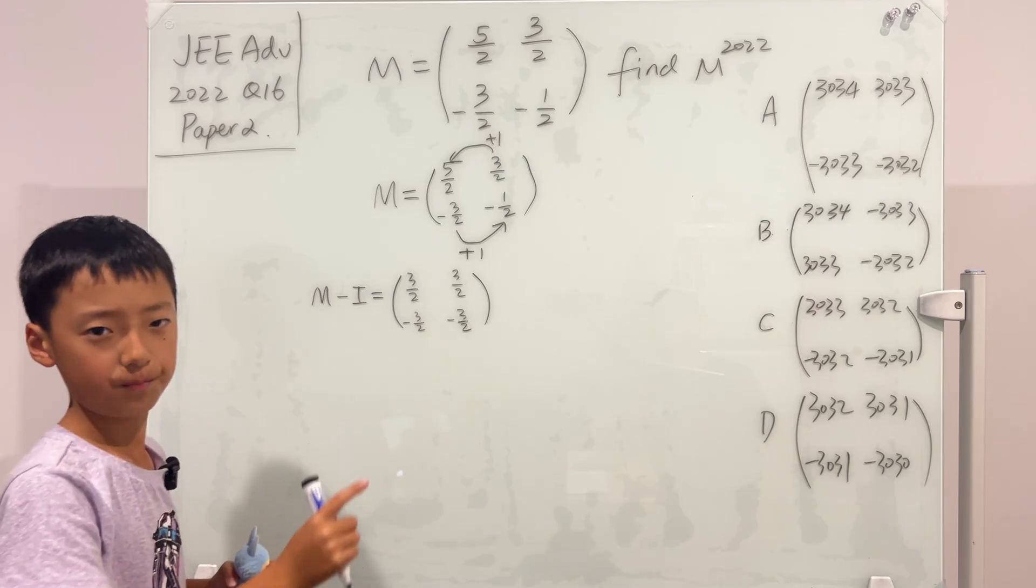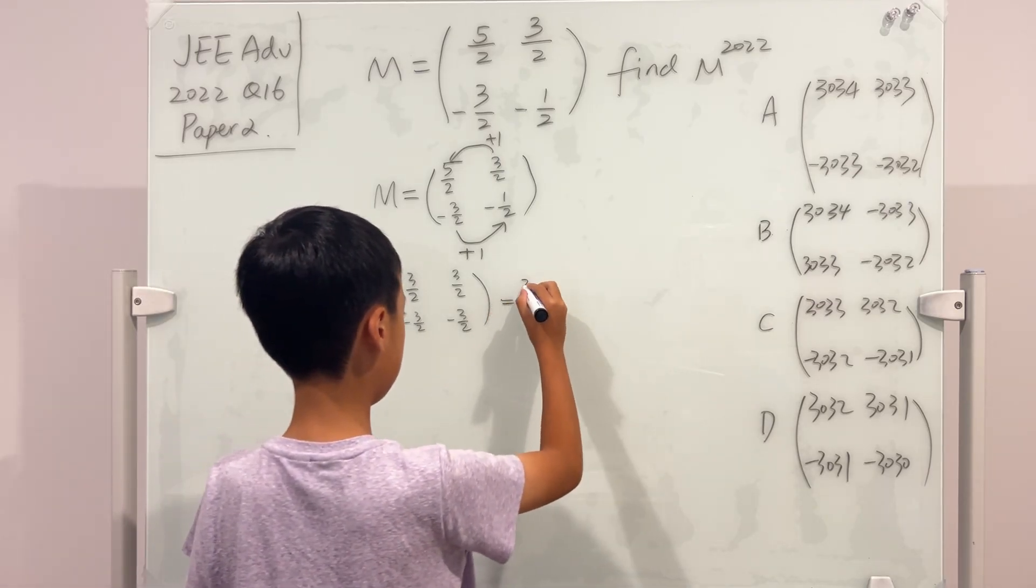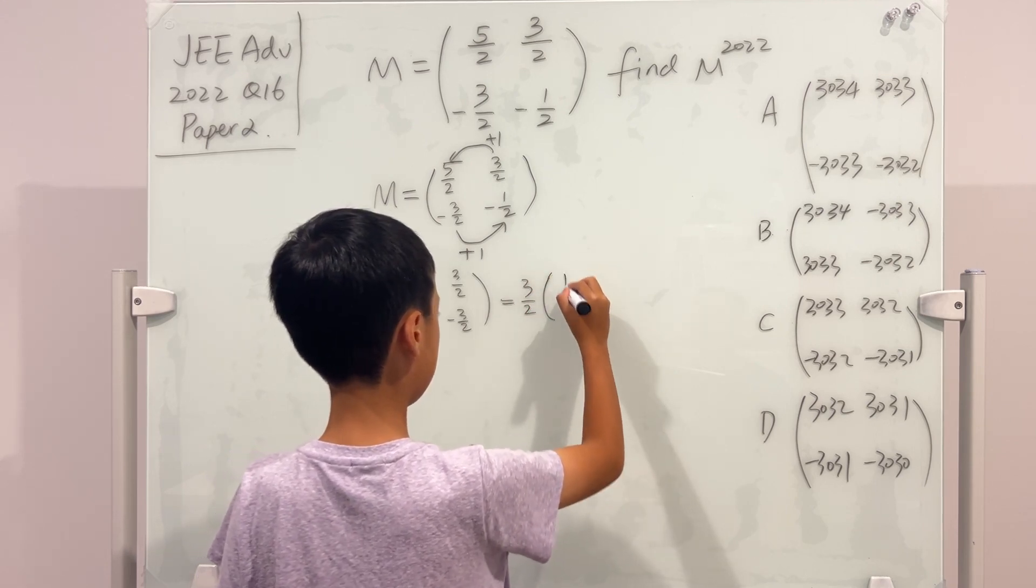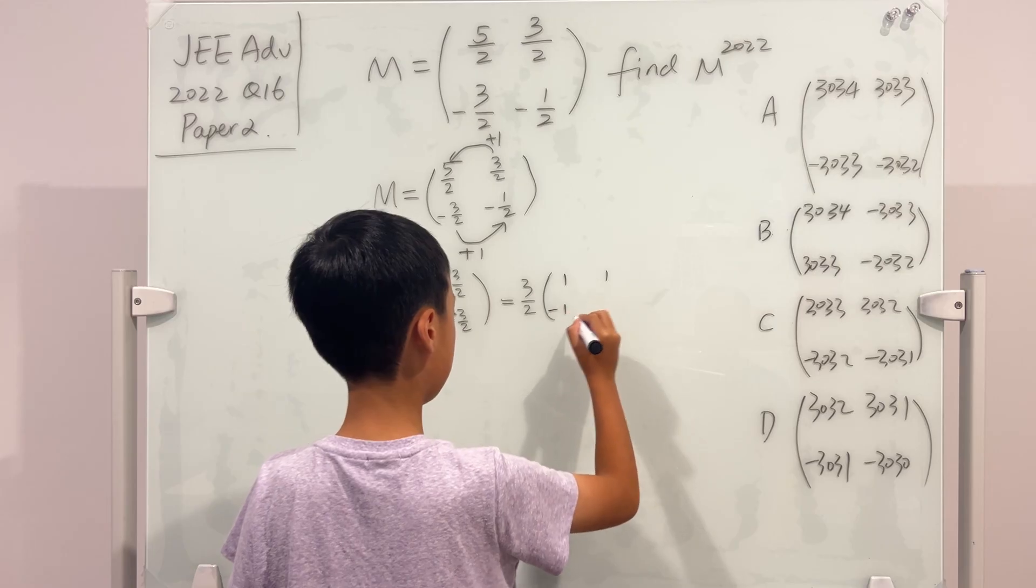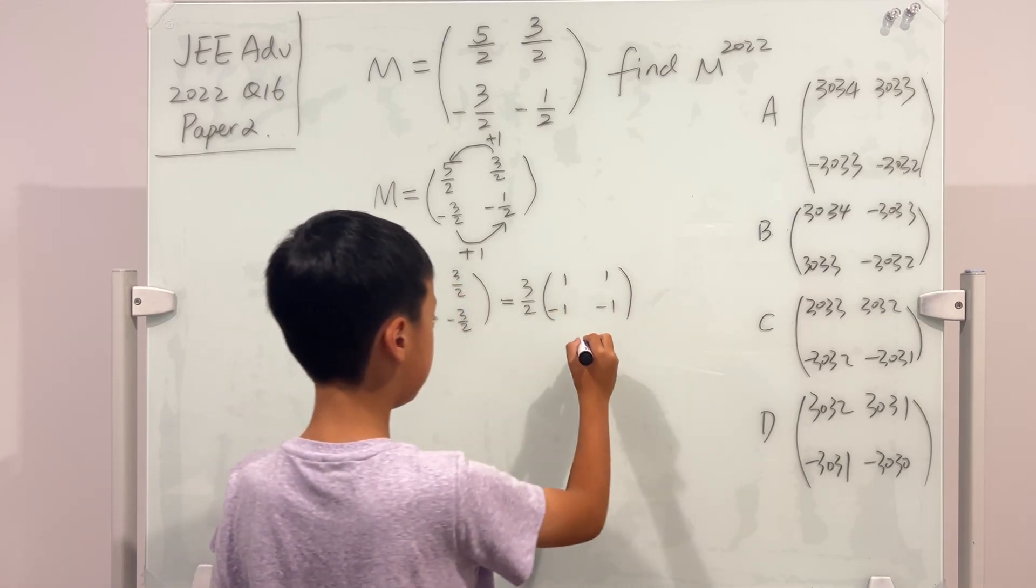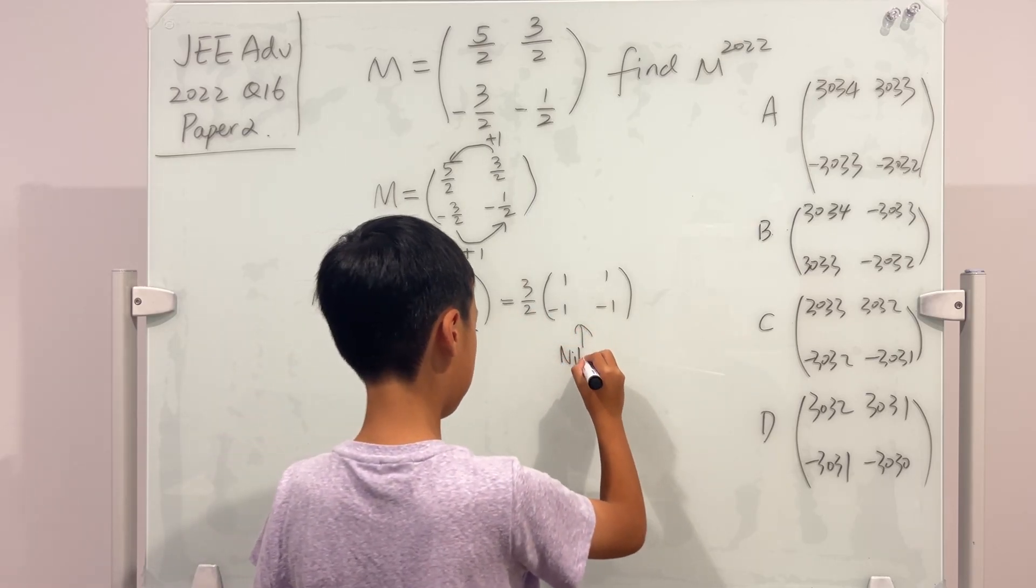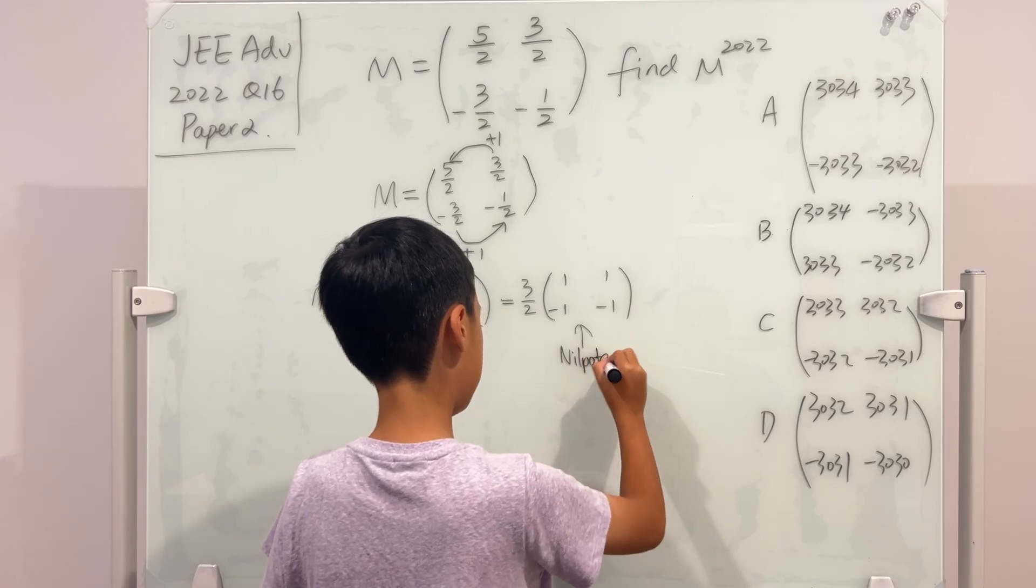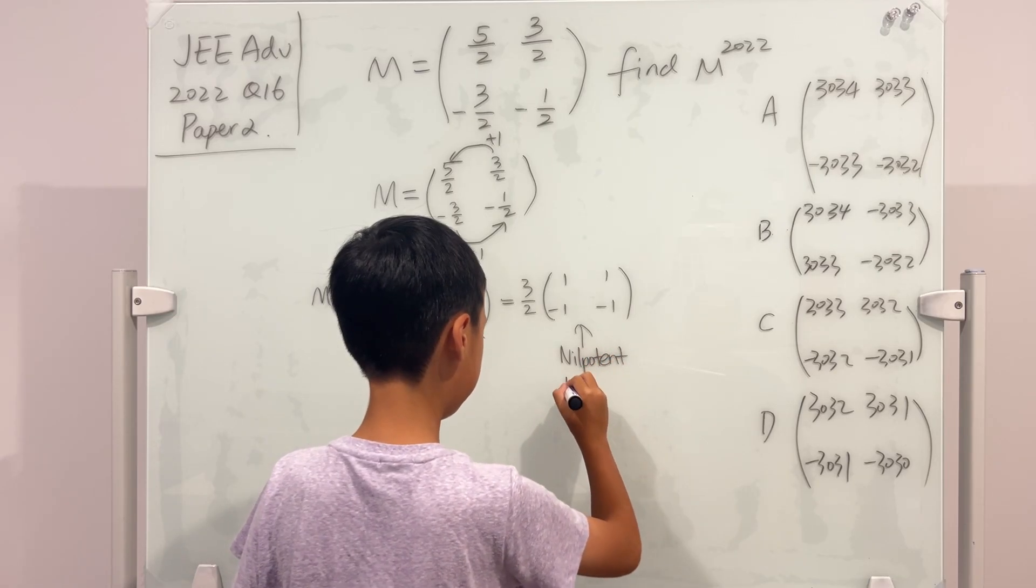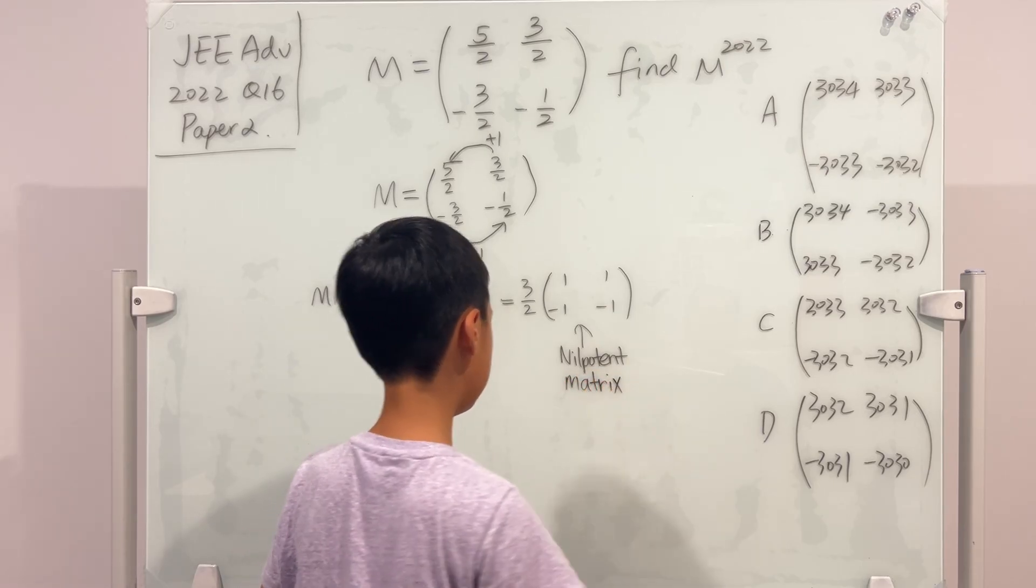Beautiful. Well, of course we can factor out a 3 over 2. And this is what is so-called a nilpotent matrix. Please don't get mad at me if I pronounce this wrong.